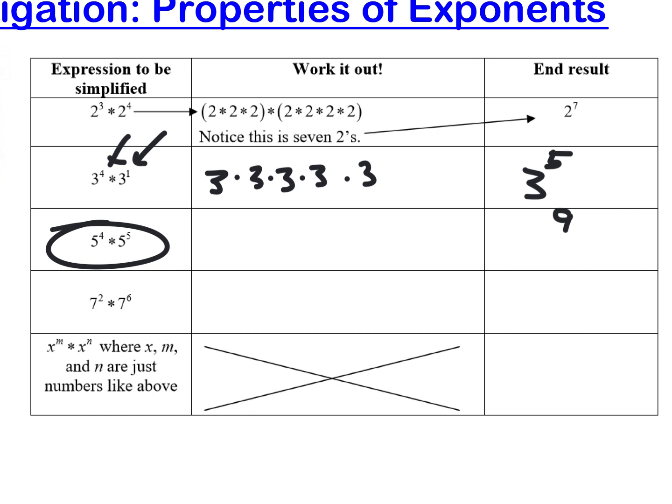Thank you. That's a five, not an A. I did all mine with A's, but this is a five. And then this one, I'm not going to write out seven times seven and then seven six times. That's dumb. I'm just going to put seven to the what? Eighth.